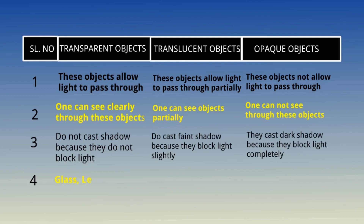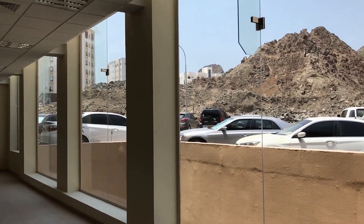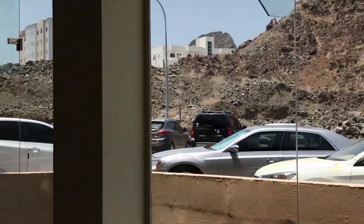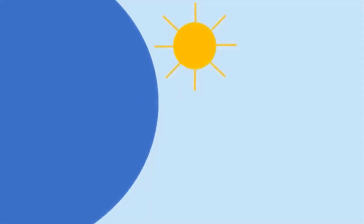Examples: transparent — glass, lens; translucent — tissue, tinted glass; opaque — boots, bricks. Now look at this practical video example: the pillar is an opaque object, the glass window is a transparent object through which you can see outside, and the lower frosted portion where you cannot see the chair clearly is a translucent object.